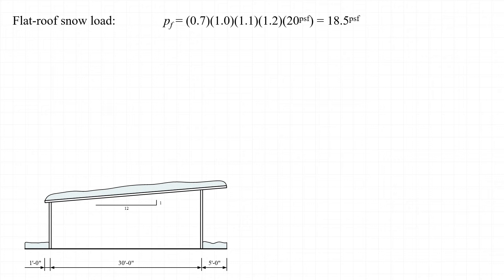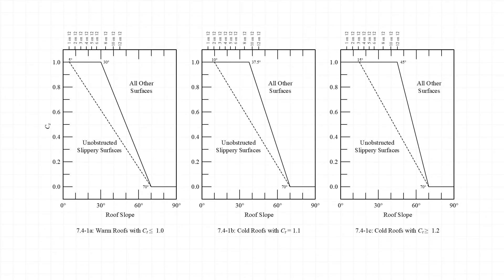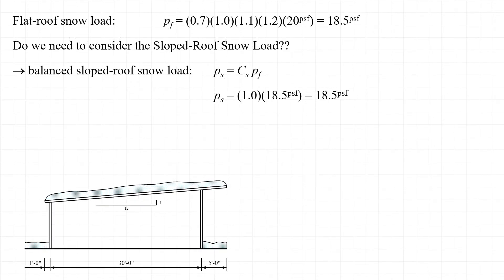Having determined the flat roof snow load, we next consider the sloped roof snow load, P sub s, which equals the roof slope factor C sub s times the flat roof snow load P sub f. The roof slope factor is determined using figure 7.4-1 from the 2016 ASCE 7 standard. With a thermal coefficient of 1.1, we use figure 7.4-1d. With a 1 on 12 pitch, C sub s equals 1.0, so the sloped roof snow load equals 18.5 pounds per square foot.